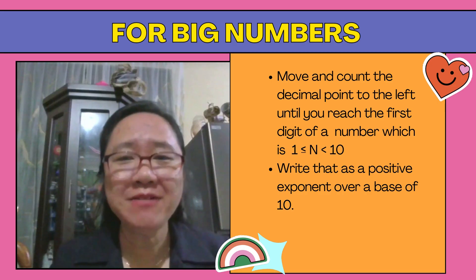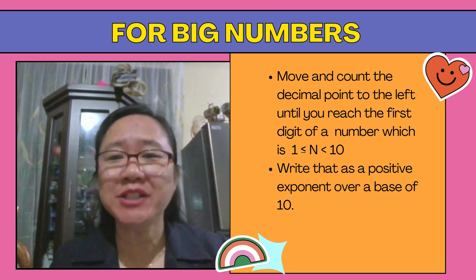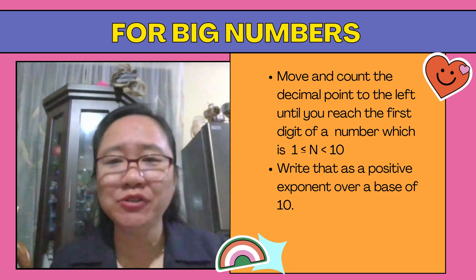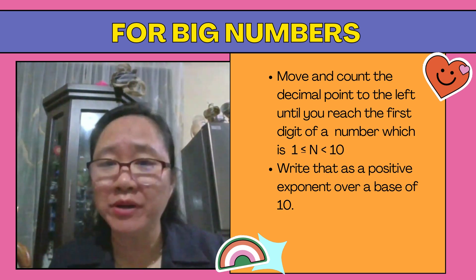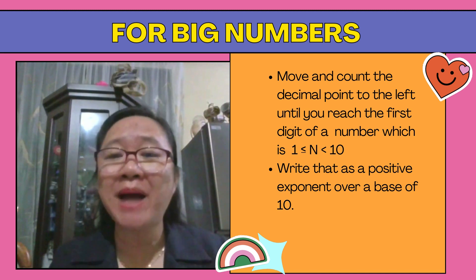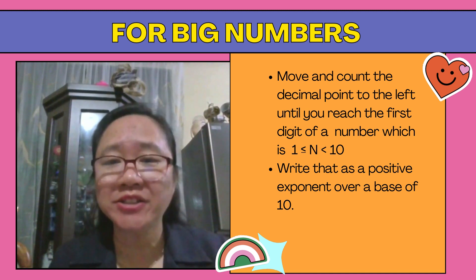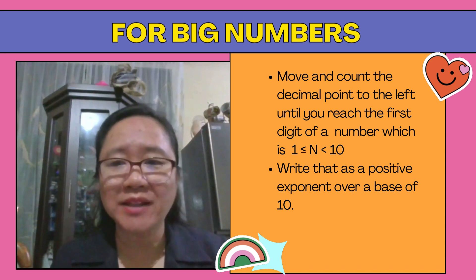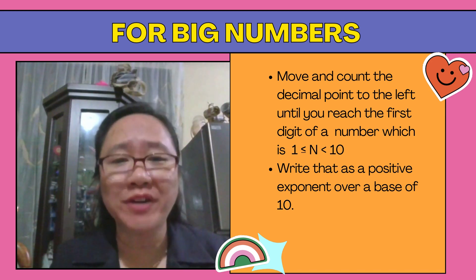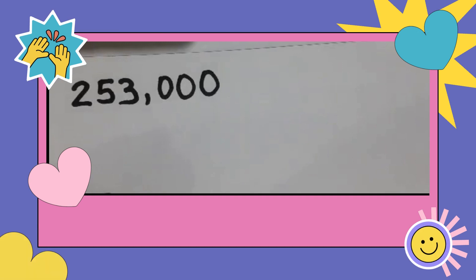For big numbers, move and count the decimal point to the left until you reach the first digit of a number which is less than 10 but equal to or greater than 1. Write that as a positive exponent over a base of 10.